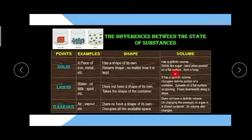The characteristics of liquid. Examples are water, oil, milk, spirit, etc. Shape: does not have a shape of its own, takes the shape of the container. What about its volume? It has a specific volume, occupies definite portion of container.